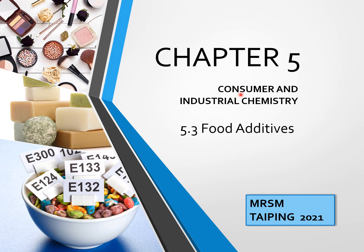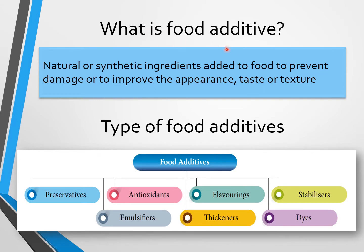Assalamu'alaikum and good day. Today, Chapter 5: Consumer and Industrial Chemistry. We go to the third part, which is food additives. What is a food additive? A food additive is a natural or synthetic ingredient added to food to prevent damage or to improve the appearance, taste, or texture. We have seven types of food additives — please write the names.